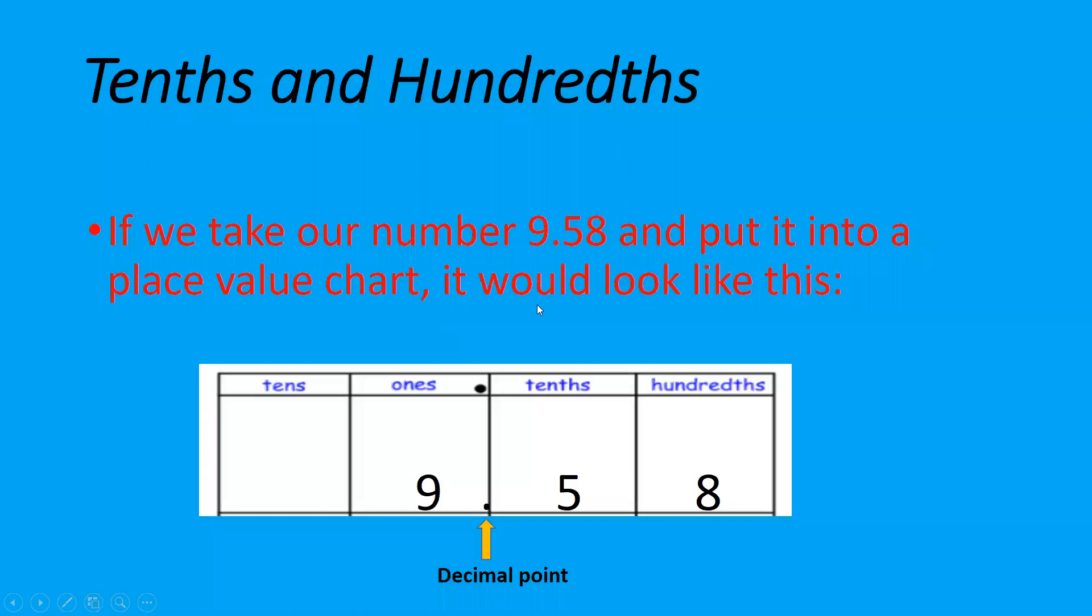If we take our number, 9.58, and put it into a place value chart, it would look something like this. We can see that we've got 9 ones, the decimal point is after the 9, 5 tenths and 8 hundredths.